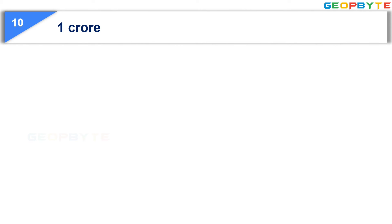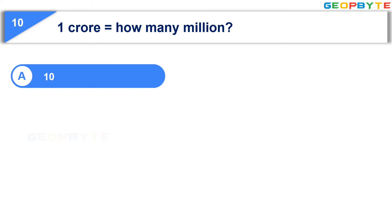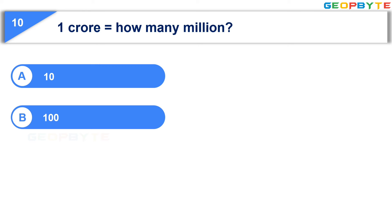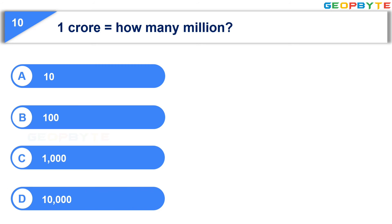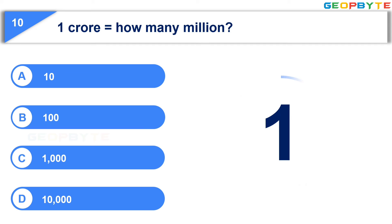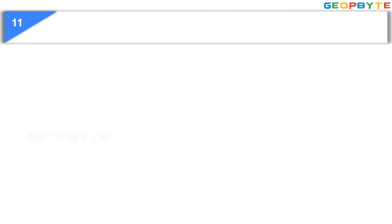The next question is: 1 crore is equal to how many million? Option A: 10, Option B: 100, Option C: 1,000, Option D: 10,000. Your time starts now. Your time is up and the correct answer is Option A: 10. Moving to the 11th question.